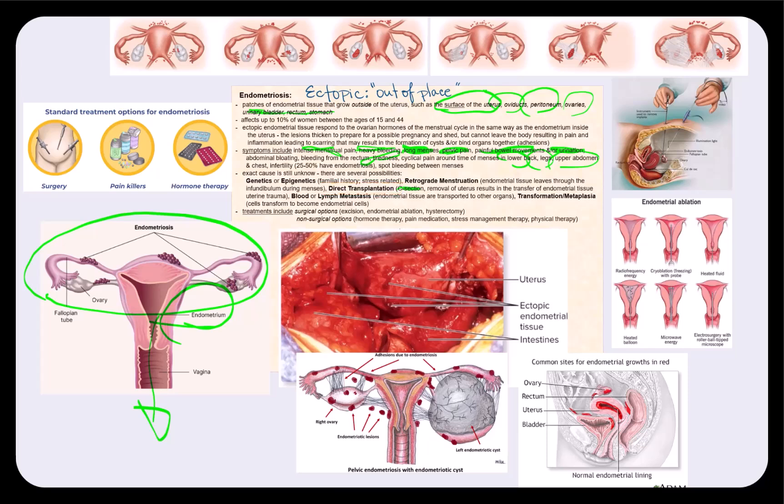It can also be transferred to other organs with blood or lymph. And that's referred to as blood or lymph metastasis. The last possibility is transformation, also called metaplasia, where cells that are outside of the uterus literally transform to become endometrial cells.